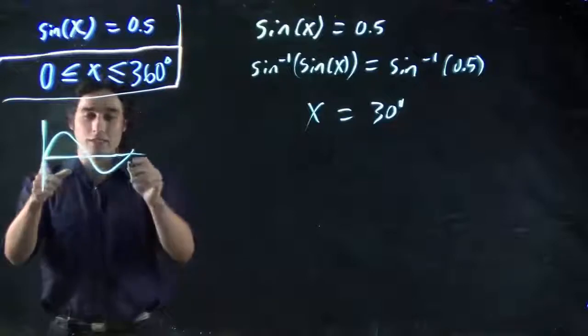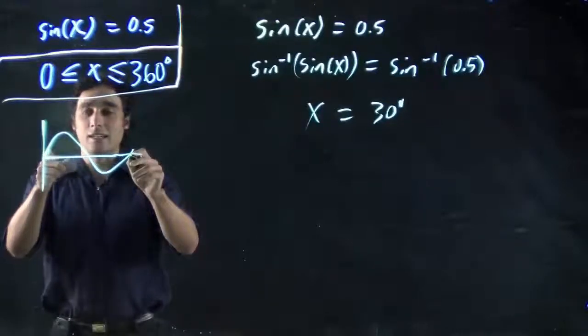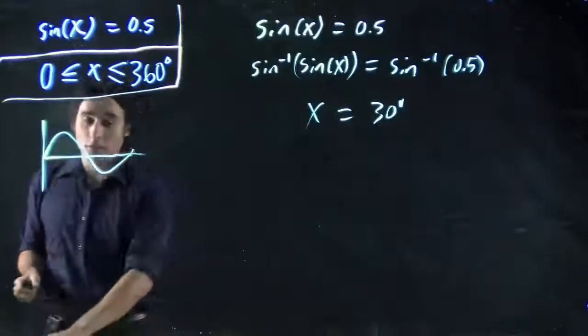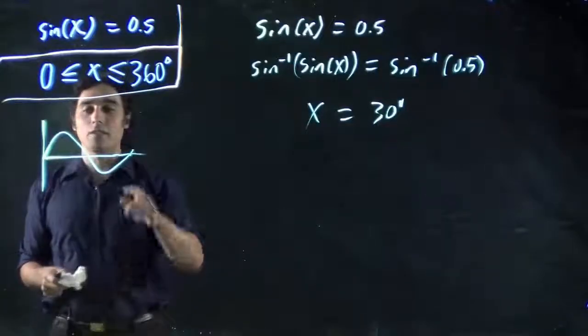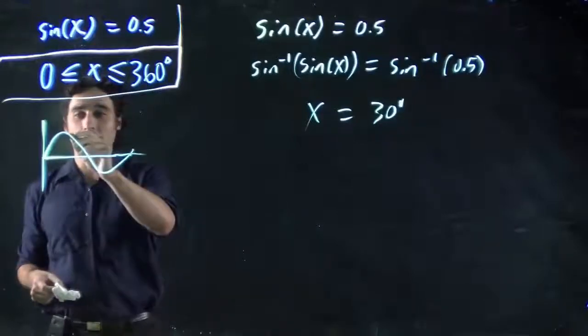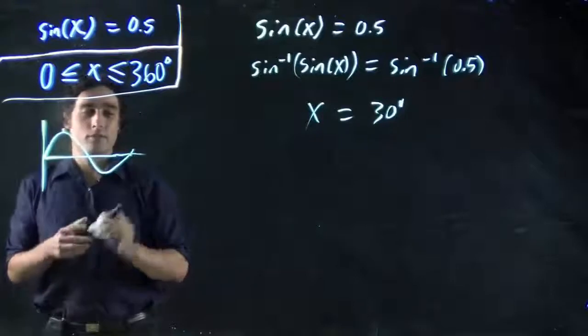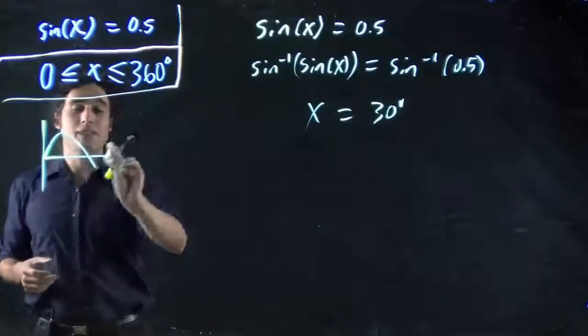So why is that important? Well, if this is 0 to 360, you can see if it's 0.5 here, there's going to be another answer. So, often we'll find there's two answers. In the previous case, when you're solving for, say, 1, well, there's only going to be one answer in the first range. But in this case, we should expect to see two answers.